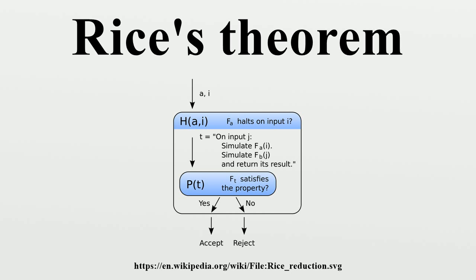Where a property is of the kind that either of the two machines may or may not have it, while still implementing exactly the same language, the property is of the machines and not of the language, and Rice's theorem does not apply. Using Rogers' characterization of acceptable programming systems, Rice's theorem may essentially be generalized from Turing machines to most computer programming languages. There exists no automatic method that decides with generality non-trivial questions on the behavior of computer programs.